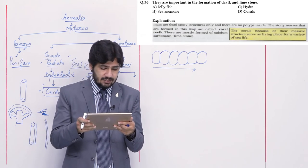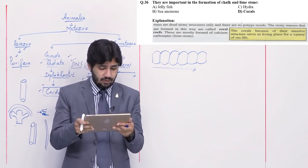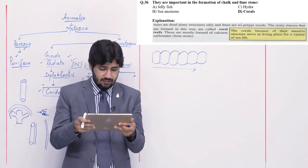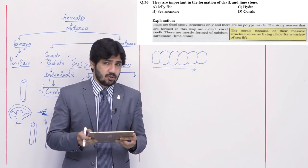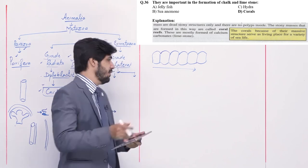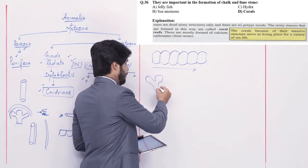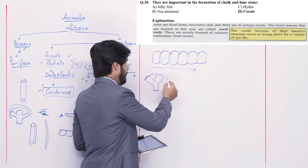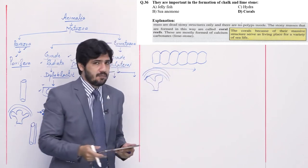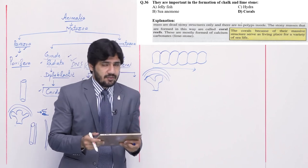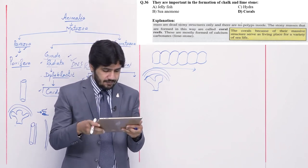Question number 36: they are important in the formation of chalk and limestone — alpha jellyfish, beta sea anemone, charlie hydra, and delta corals. Within Nidarians, the polyp form secretes calcium carbonate skeleton outside, which provides chalk and limestone. Right option is delta — corals.